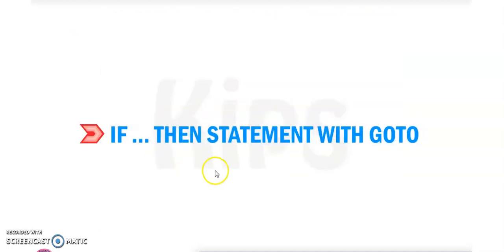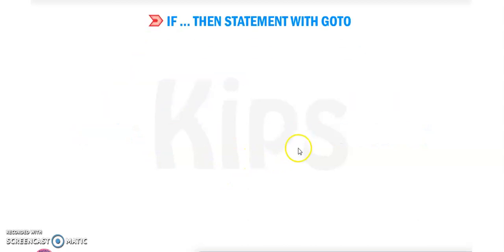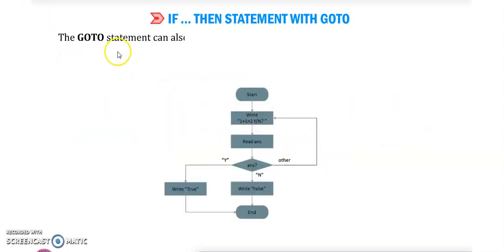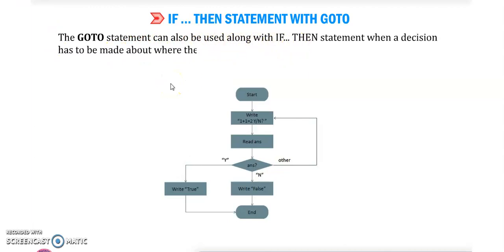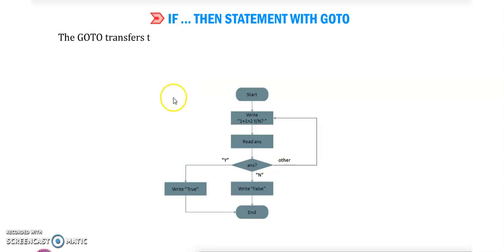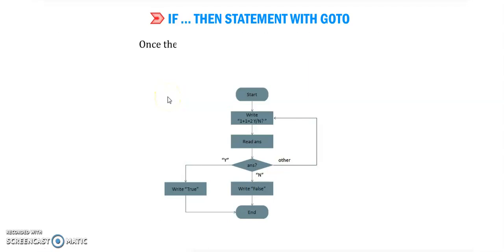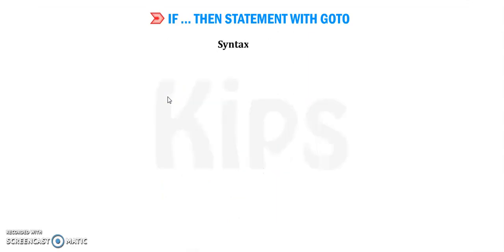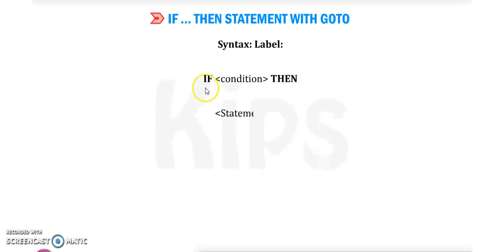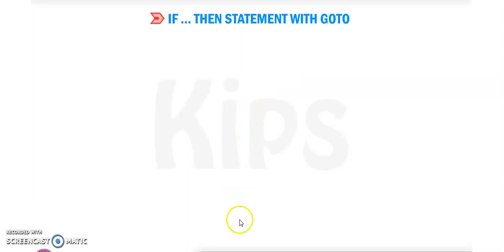The next topic is the if-then statement with the goto statement. The goto statement can also be used along with the if-then statement when a decision has to be made about where the program control should go next. The goto statement transfers control to a specified label and allows execution of the program for a specific number of times. Once the condition is satisfied, the execution stops. Syntax: if condition then statement, then goto label, then end if.